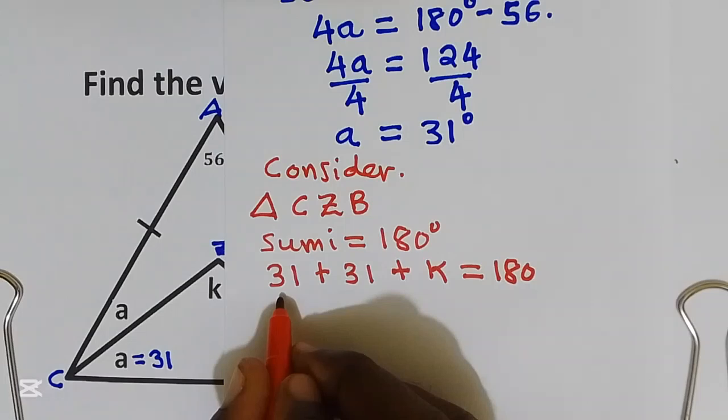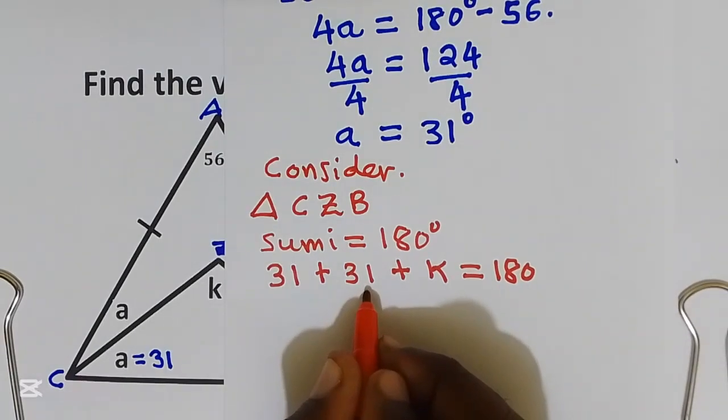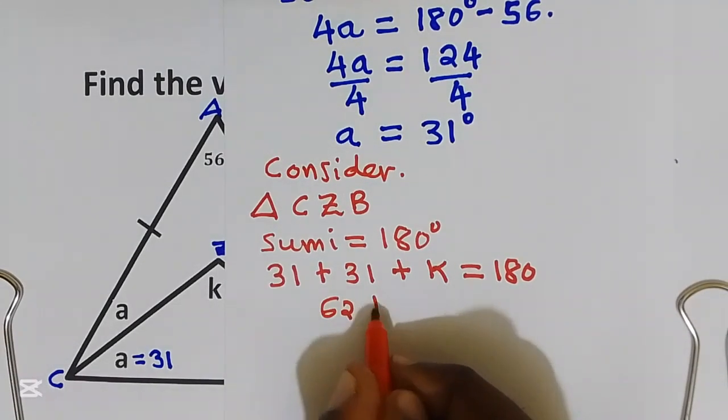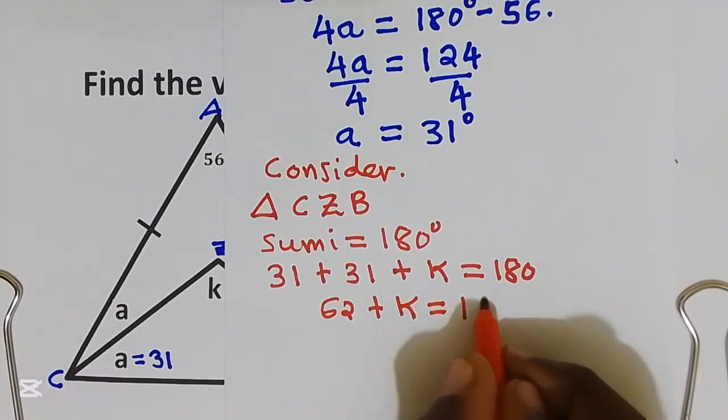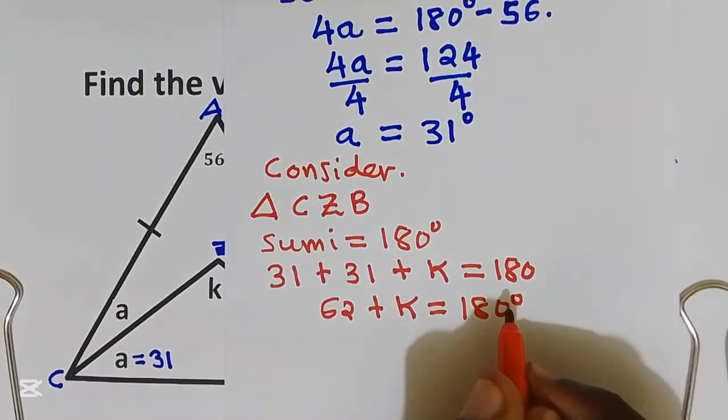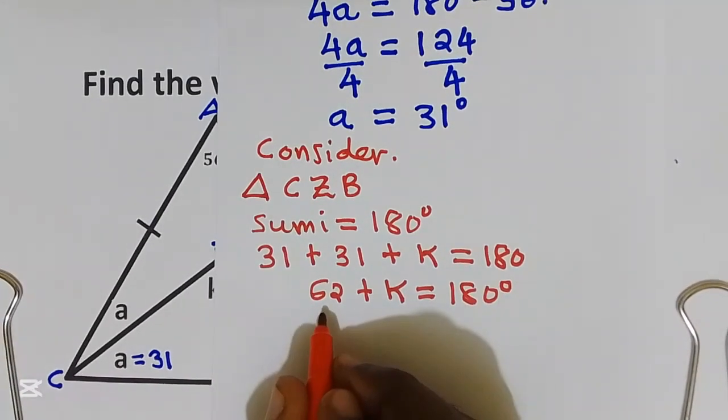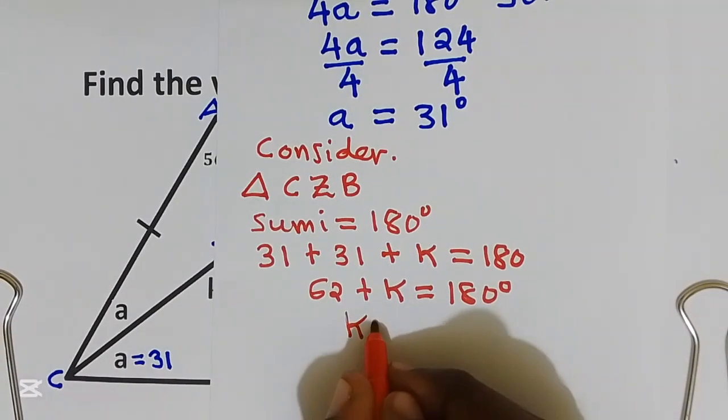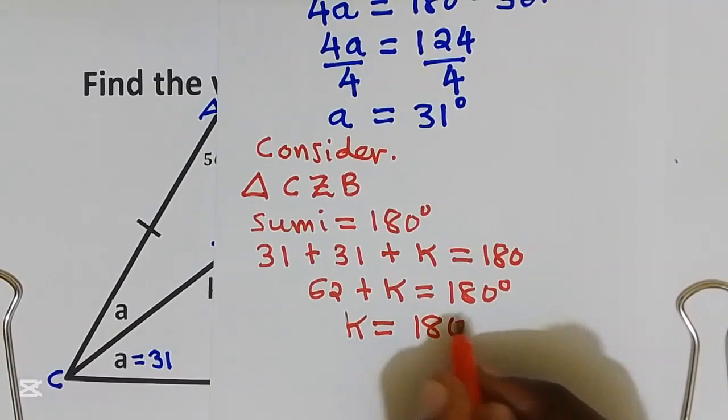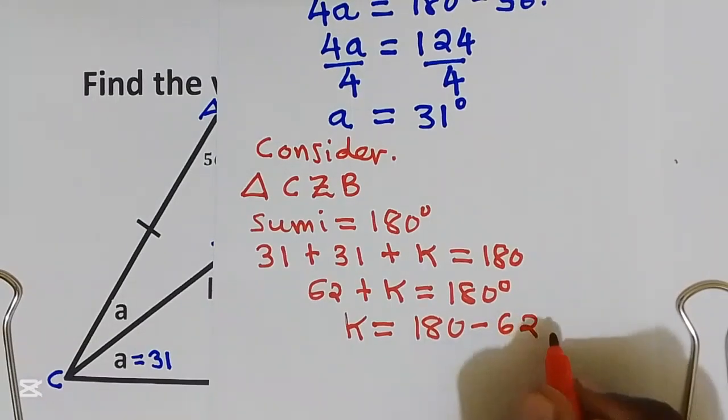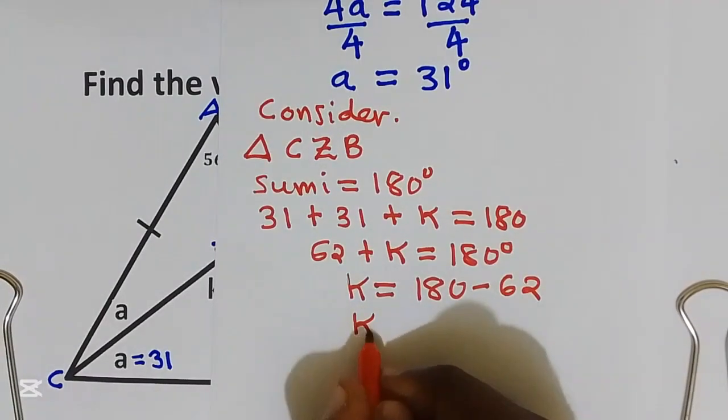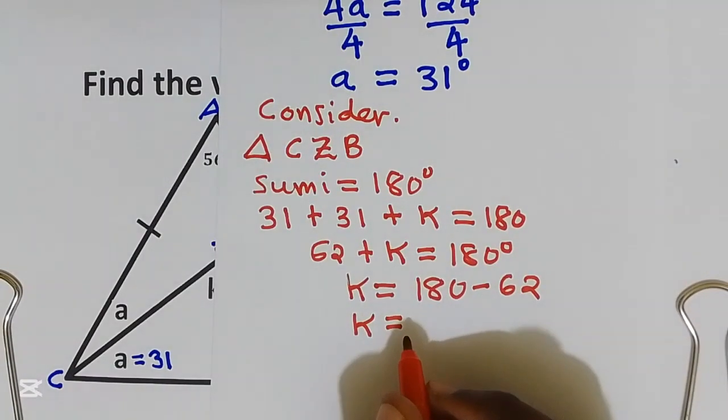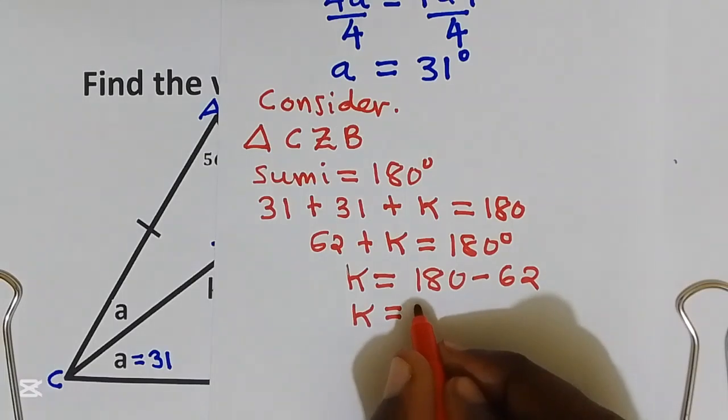31 plus 31 we get 62. Plus k, this is equal to 180 degrees. Bring 62 to the right hand side. K is equal to 180 take away 62. We got k is equal to 118 degrees.